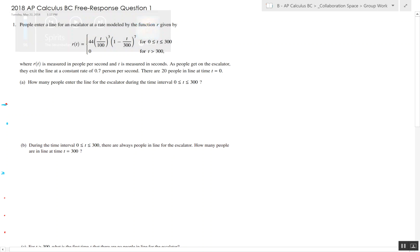In the 2018 AP Calculus free response question 1, we're given the function for the rate of change at which people enter an escalator. Part A asks us how many people enter the line for the escalator on the interval 0 to 300.